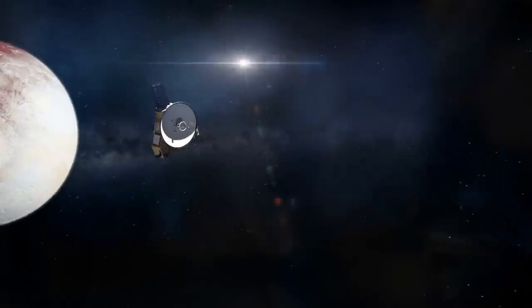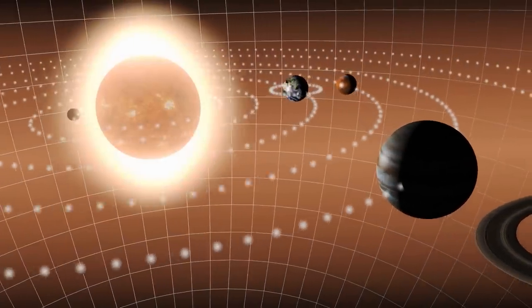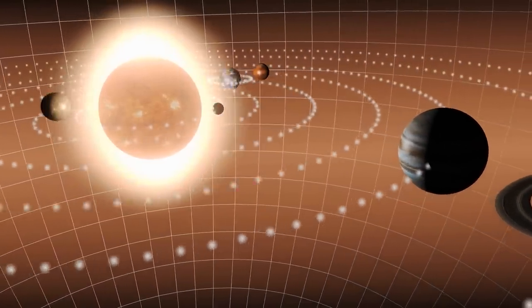The probe passed the dwarf planet Pluto in 2015 and is now on its journey into interstellar space. New Horizons already detected a faint light source at the far edge of the solar system. However, this was even fainter than the light data now obtained from the Hubble images.